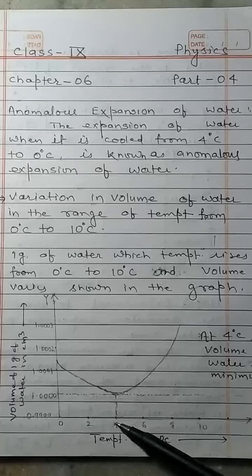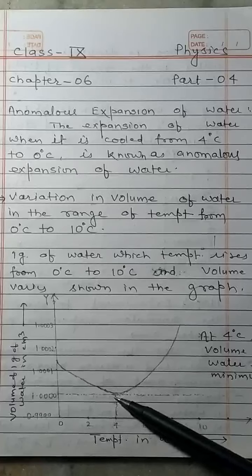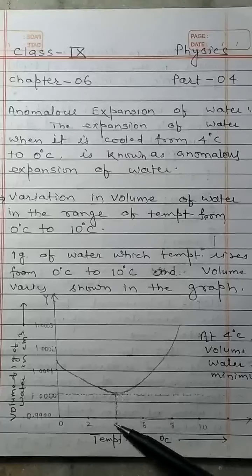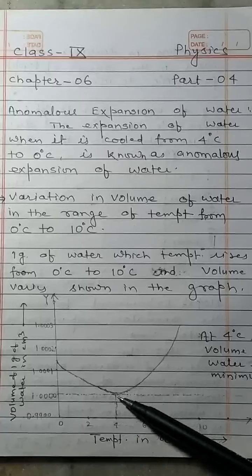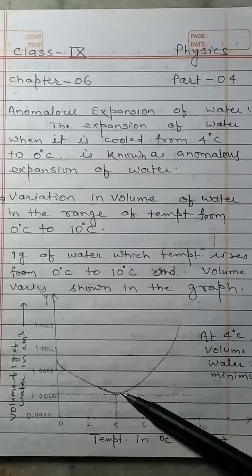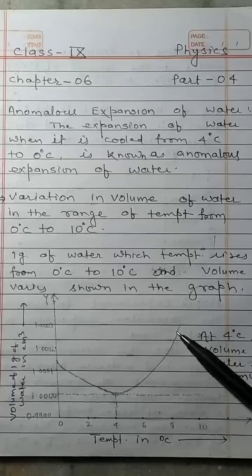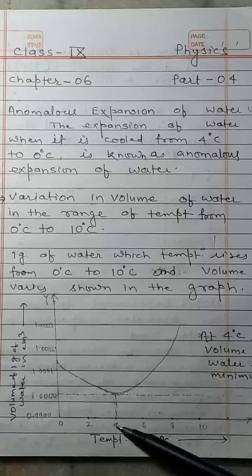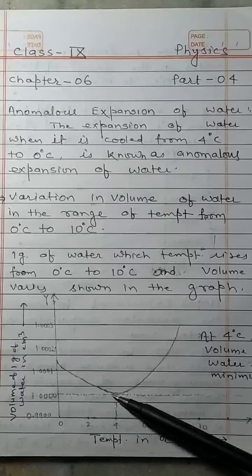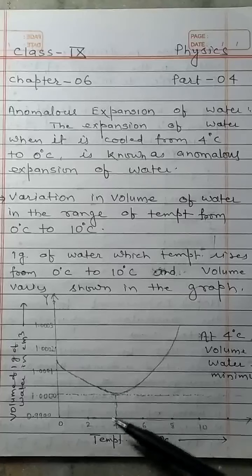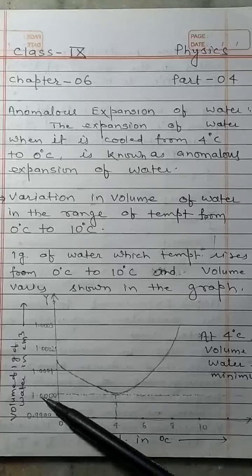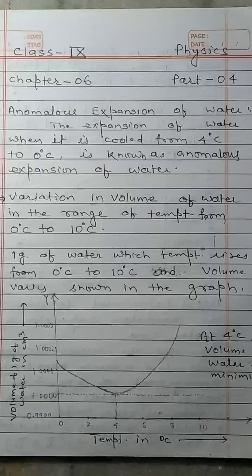Volume of water decreases and becomes minimum at 4°C. So at 4°C, the volume of water is minimum. On further heating the water beyond 4°C, the volume of water increases gradually. At 4°C, the volume of water is minimum, which is 1 cubic centimeter.